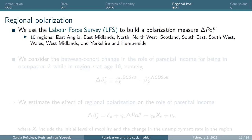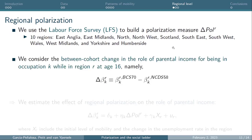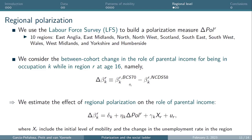At the regional level, we use the Labour Force Survey to build a polarization measure across 10 NUTS-2 regions. We are interested in the change in the role of parental income between cohorts, measured by the difference in beta coefficients for the younger versus older cohort in explaining occupation at age 42 — estimated at the regional level. We then run a regression looking at the effect of this change in polarization on the change in the role of parental income.